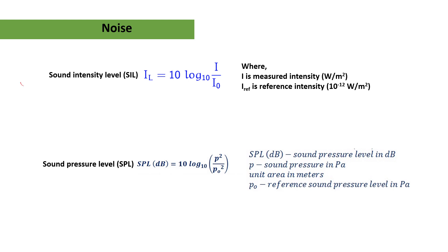There are some formulas related to noise. The sound intensity level (SIL) is: IL = 10 × log₁₀(I / I₀), where I is the measured intensity and I₀ is the reference intensity. The sound pressure level (SPL) is: SPL = 10 × log₁₀(p² / p₀²), where p is the measured sound pressure and p₀ is the reference sound pressure. These are two important formulas for sound intensity level and sound pressure level.